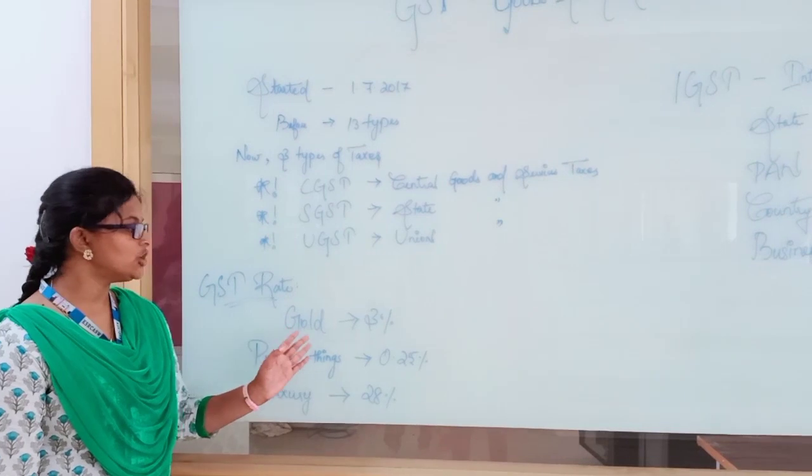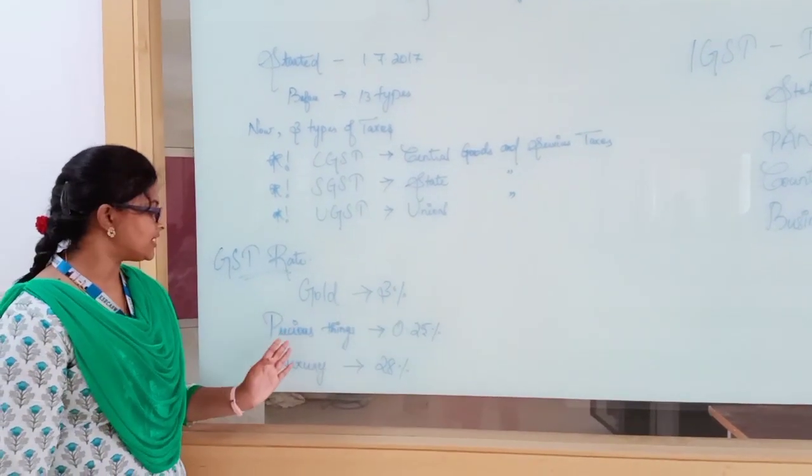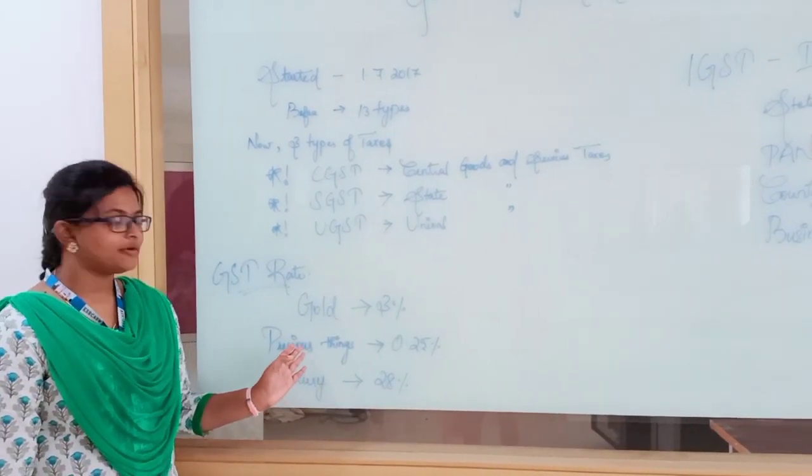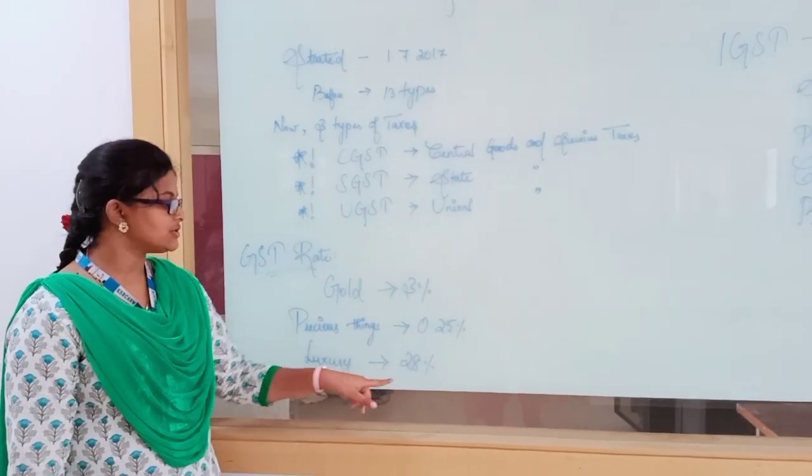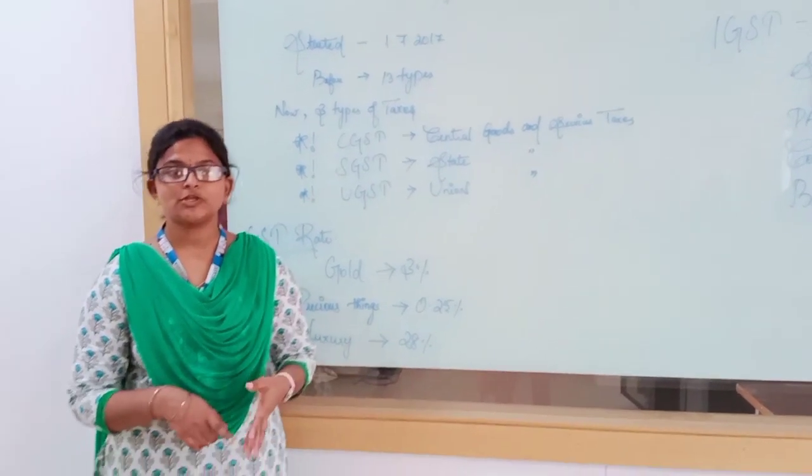GST rates are: gold 3%, diamonds 0.25%, and luxury goods 28%. Petrol, diesel, and alcohol are not under GST.